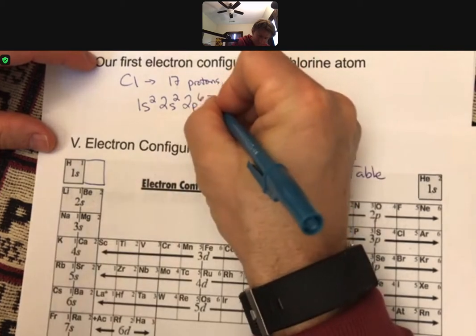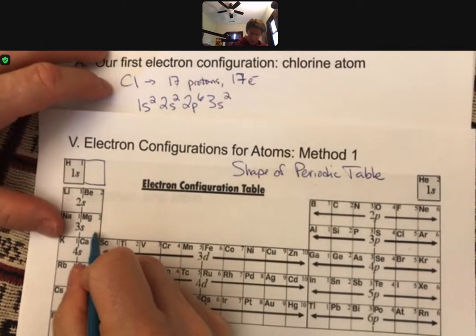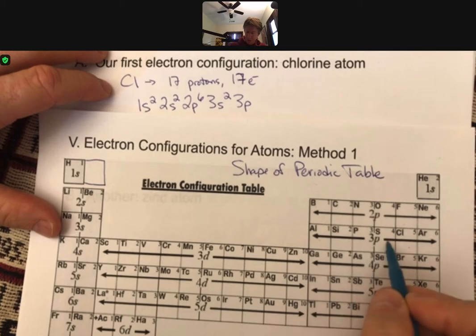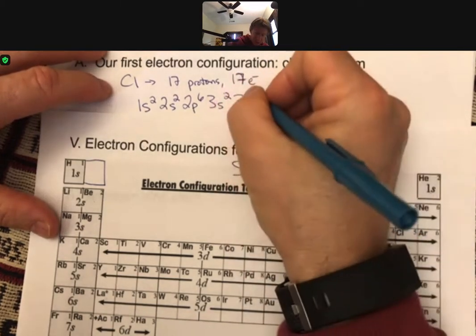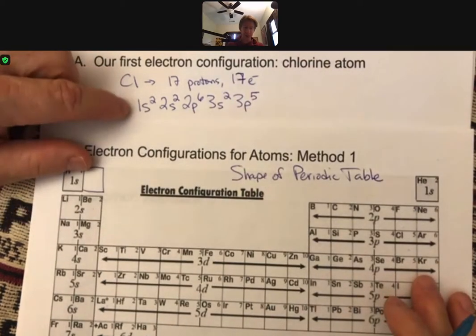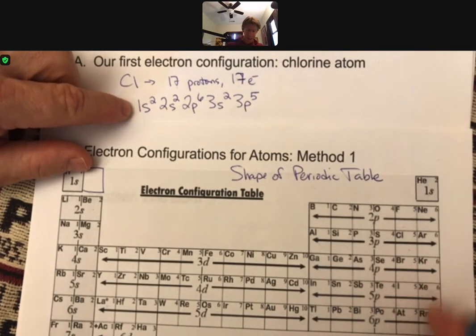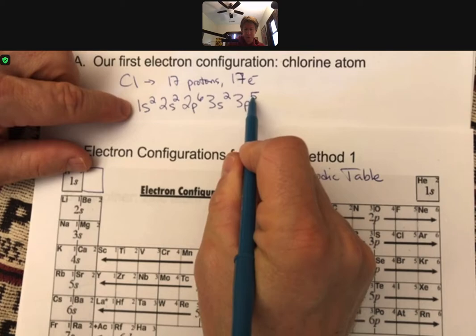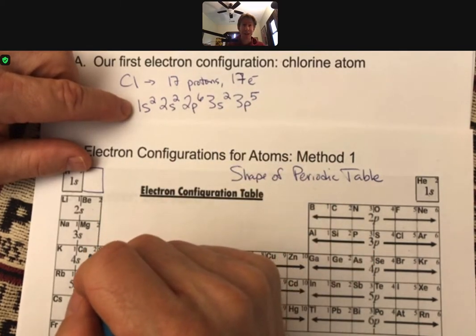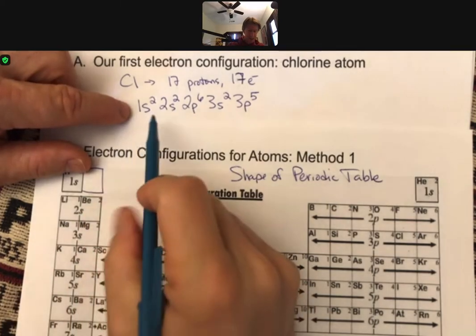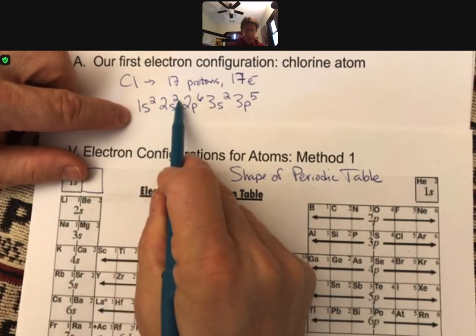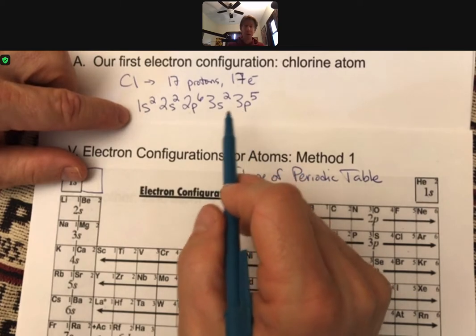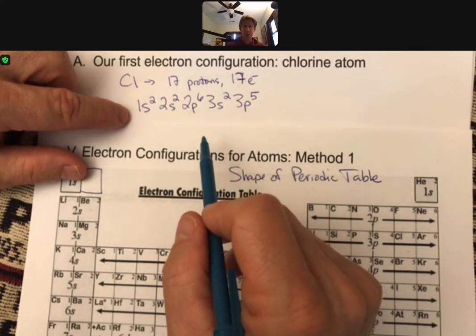3s. 2. Keep going. 3p. And 3p, we go 1, 2, 3, 4, 5. There's chlorine. 3p, 5. That is the electron configuration for the chlorine atom. It has 2, 4, 6, 8, 10, 12, and 5 is 17. It has 17 electrons. And it has 2 electrons in N equals 1, 8 electrons in N equals 2, and 7 electrons in N equals 3. We do not need any more of the sublevels for chlorine.